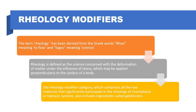Rheological modifiers are substances which are concerned with the flow and viscosity of substances, and they play a very wide role in different types of cosmetics. The rheological modifier category comprises all raw materials that significantly participate in rheology — meaning the flow properties of various monophasic systems like solutions, or biphasic systems like suspensions or emulsions — and also includes ingredients called gelatinizers.